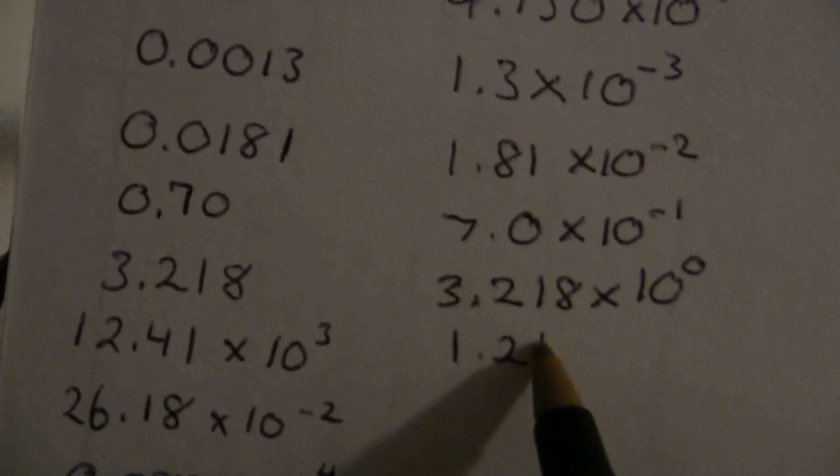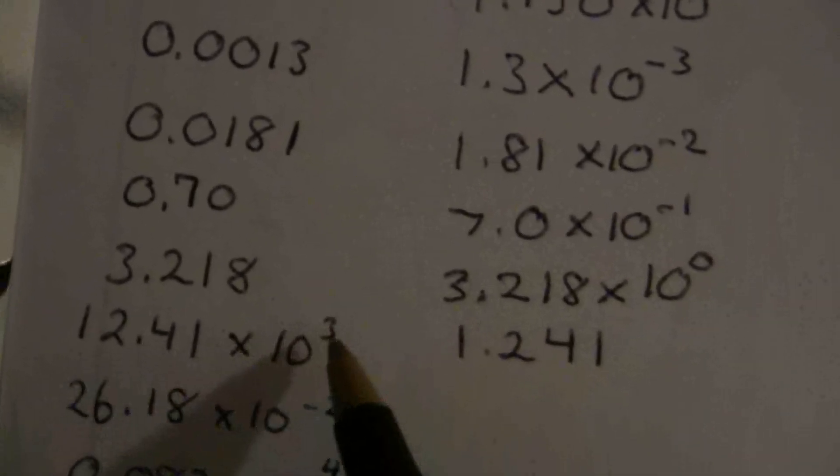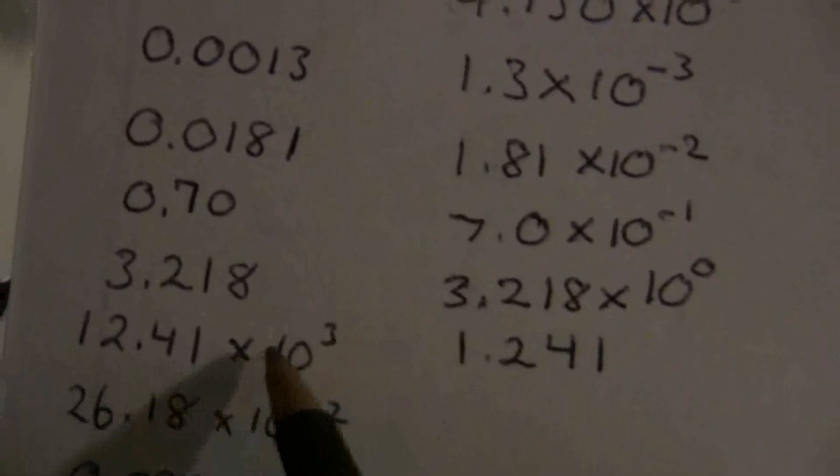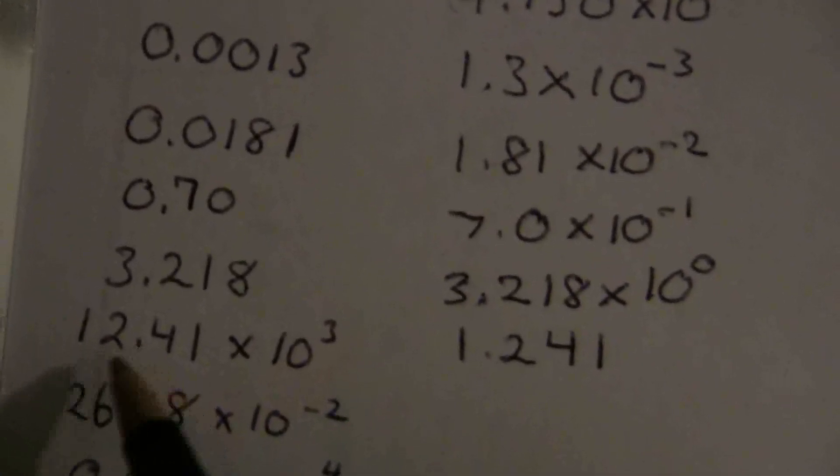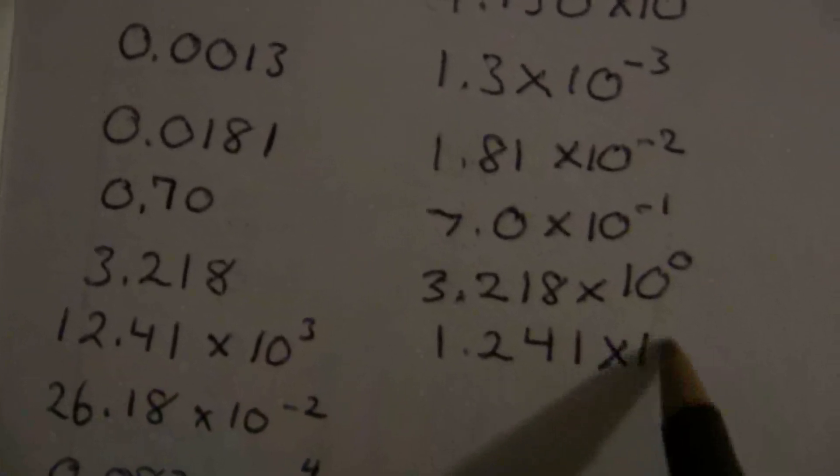Here we have an exponent to keep track of, and so this will be 1.241. Instead of times ten to the three, instead of moving it three places to the right, we need to move it an additional one place, so that will be times ten to the fourth.